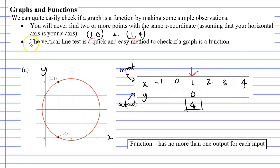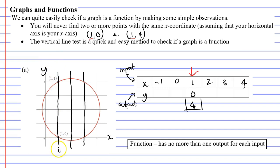Now the second dot point talks about the vertical line test — a quick and easy method to check if a graph is a function. It basically involves drawing a vertical line. When I draw this vertical line at many points on the graph, you'll see it passes through two points, especially the same two points I listed before. If you can draw a vertical line which passes through more than one point, that is proof that it's not a function. Essentially the second dot point is the same as the first — the only difference is that in the first we list two points, whereas in the second we draw a line through two points.